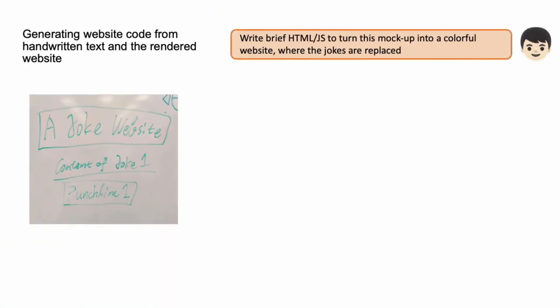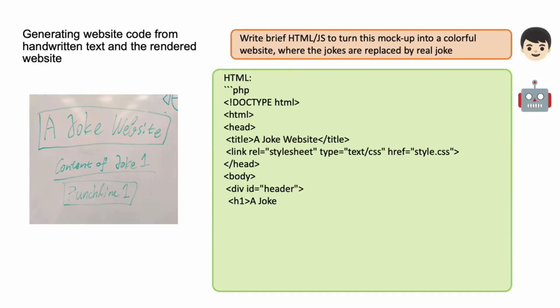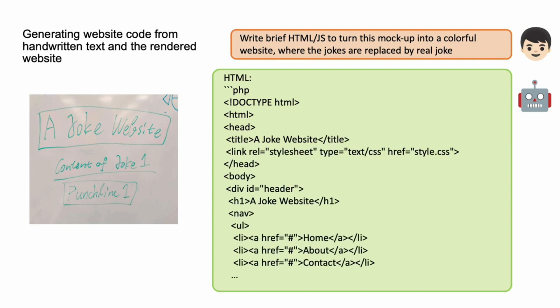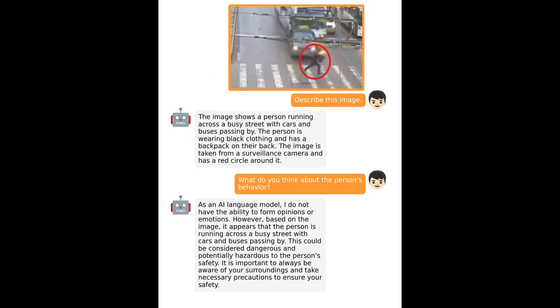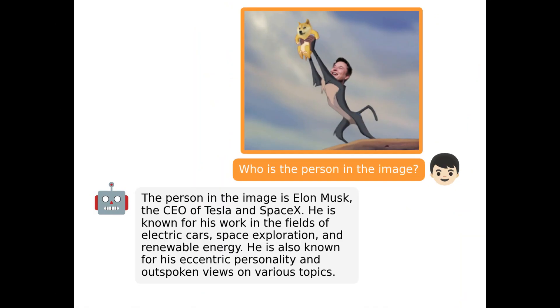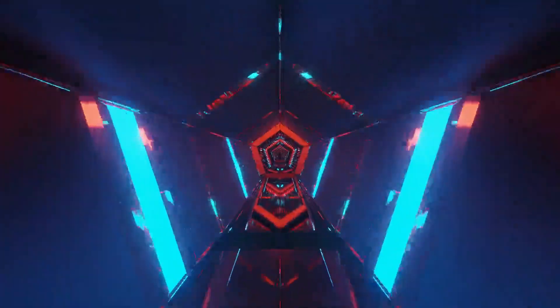It can even code an entire website just from the image input. As you can see, you can upload a hand-drawn image of a website layout and it will code the entire website in HTML and JavaScript, and you can see the website. You can also tell it to describe images, describe individuals, solve problems, and get feedback for your designs. The possibilities are endless for this AI.